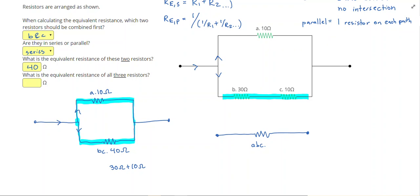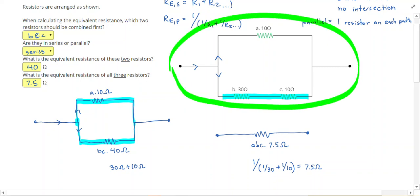In this equation, I'm going to do one divided by one over thirty, plus one over ten. If I do that, I get 7.5 ohms for resistor ABC, which is my final answer. Basically, what this is saying is that this entire configuration here will draw the same amount of current as one 7.5 ohm resistor. And that will be the first step in solving really complicated circuit problems.